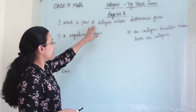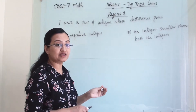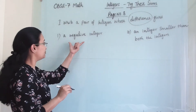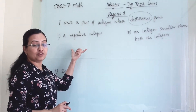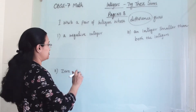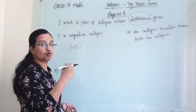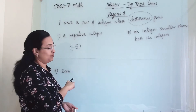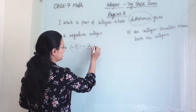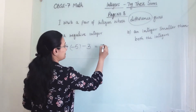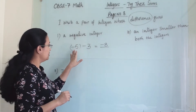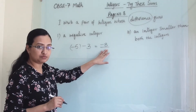Our next question asks us to write a pair of integers whose difference gives a negative integer. Earlier it was sum, now it is difference, so we perform subtraction. When a bigger number carries a negative sign, it always gives a negative integer. For example, minus 5 minus 3 gives us minus 8, which is a negative integer.